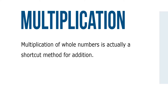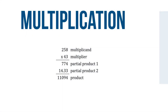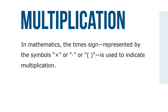Multiplication of whole numbers is actually a shortcut method for addition. Multiplication is the combination of two whole numbers in which the number of times one is represented is determined by the value of the other. These two whole numbers are known as factors. The number being multiplied is the multiplicand, and the number by which the multiplicand is multiplied is the multiplier. The answer to a multiplication problem is the product. Intermediate answers are also called partial products. In mathematics, the times sign — represented by the symbols x, a dot, or parenthetical statements — is used to indicate multiplication.